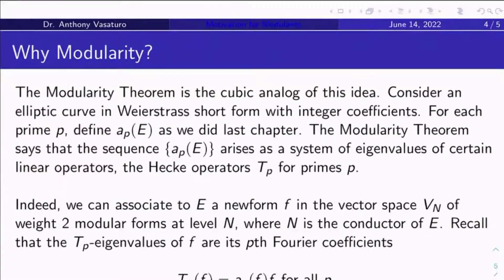So why modularity, and how does modularity tie into this discussion? Well, modularity is essentially the cubic analog of this idea. Consider your typical elliptic curve over Q in Weierstrass short form with integer coefficients. Okay, so y squared equals x cubed plus ax plus b, and a and b are integers. For each prime p, let's define a_p(E) like we did last chapter. It's p plus 1 minus the number of F_p solutions on the reduction of E mod p.